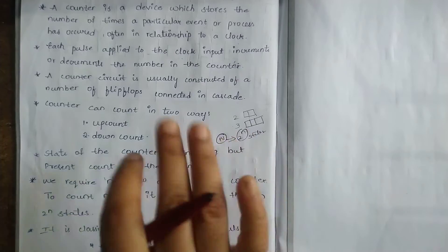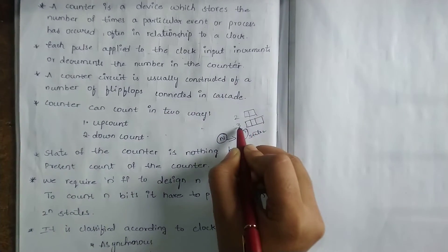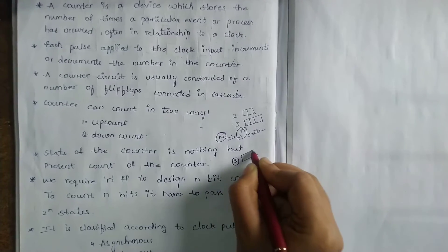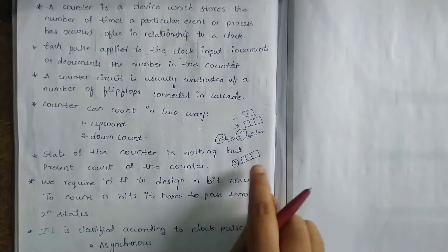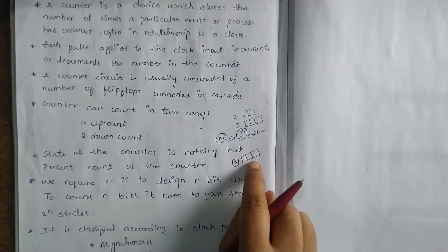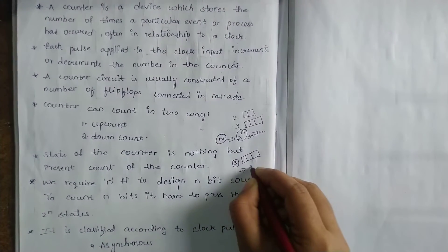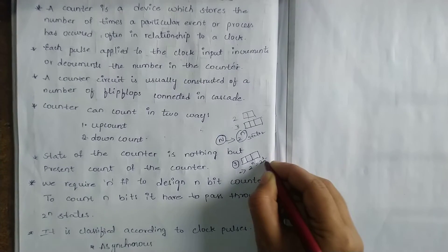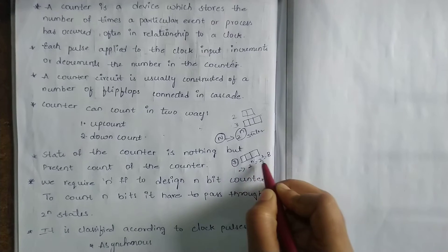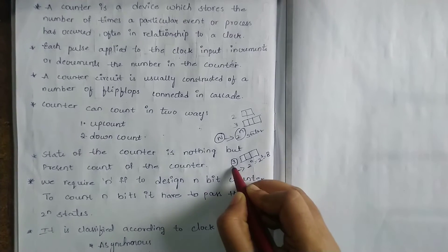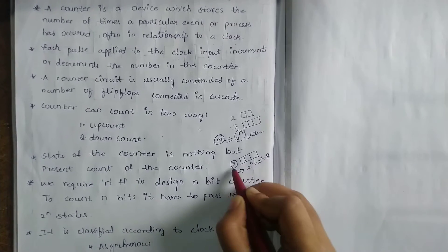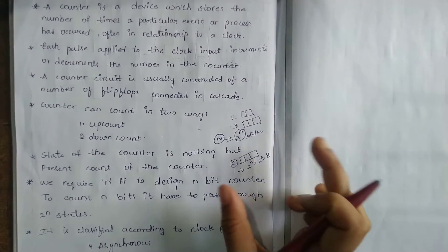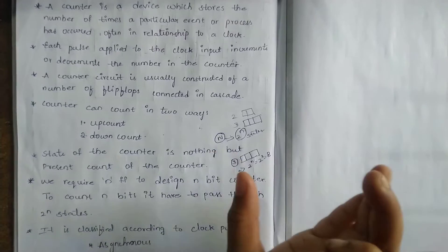For example, if you have a 3-bit counter, you need 3 flip-flops and you have to pass through 2 power 3 states — that is 8 states. For a 4-bit counter, it is 2 power 4 states, and for a 5-bit counter it is 2 power 5 states. So a 3-bit counter passes through 8 states.